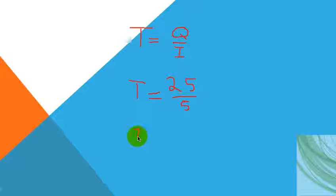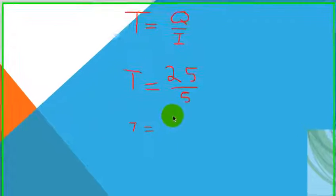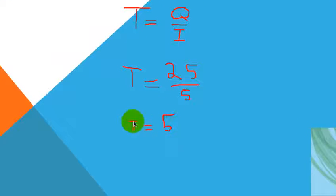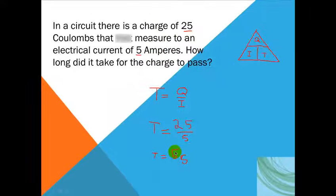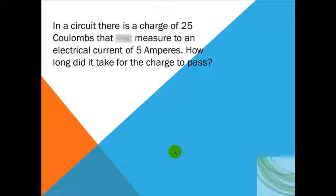And our final answer would be 5. And once again, we must put the unit of measure, which is seconds, because time is always measured in seconds in these types of equations. So once again, the final answer is 5 seconds.